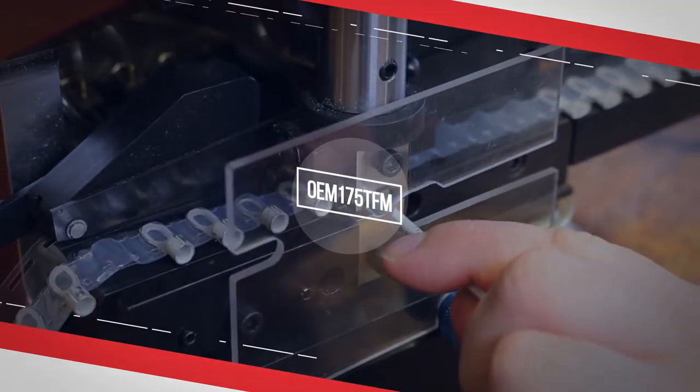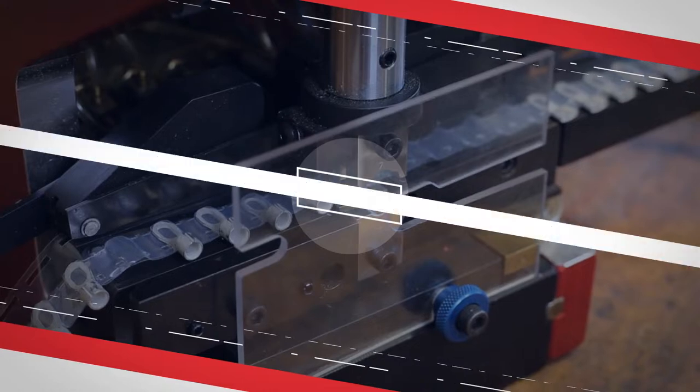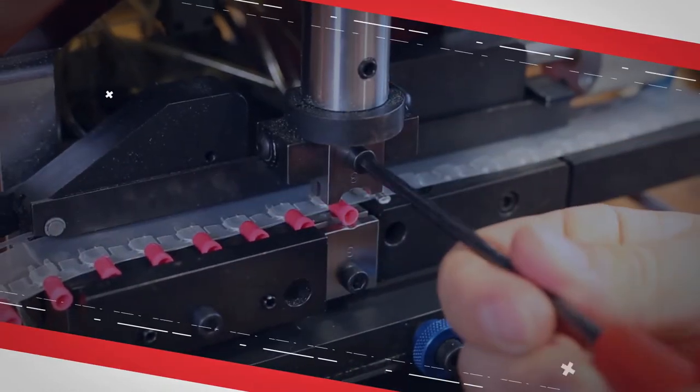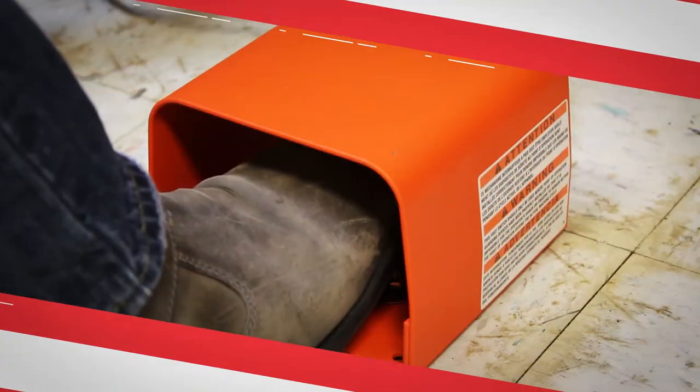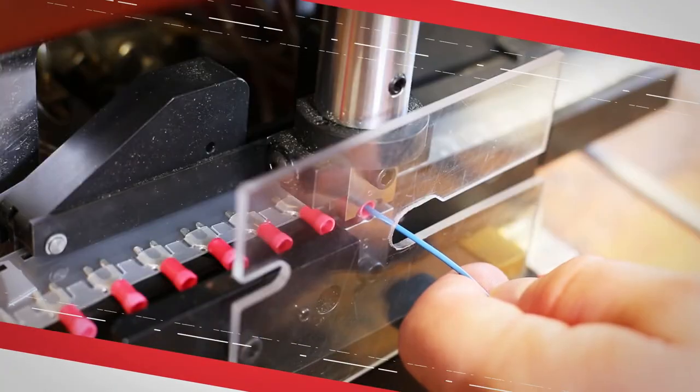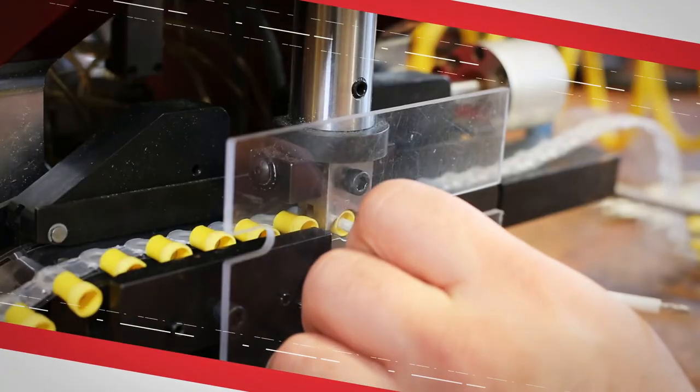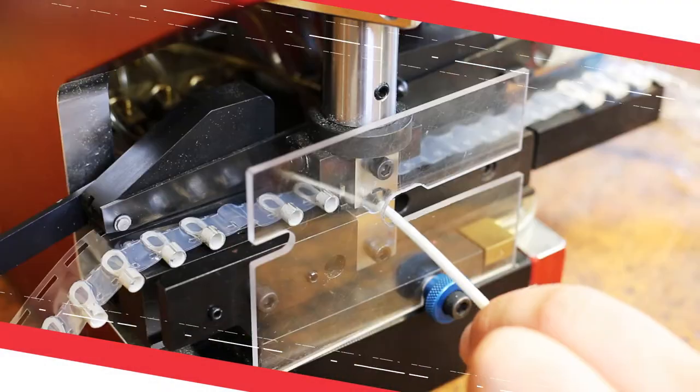The Burndy OEM-175-TFM Crimp Press is a two-step activated pneumatic unit that can accommodate a wide range of connectors and conductors. This benchtop-mounted unit is capable of withstanding high-volume production requirements with worry-free maintenance.